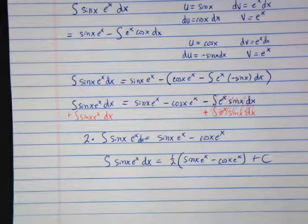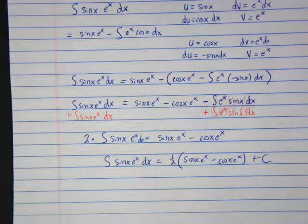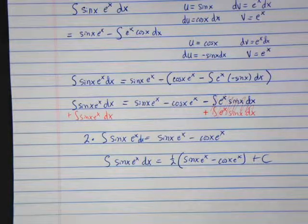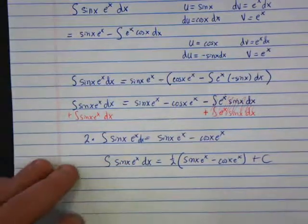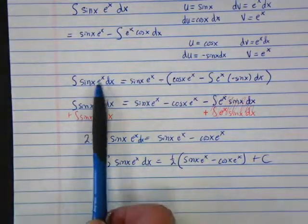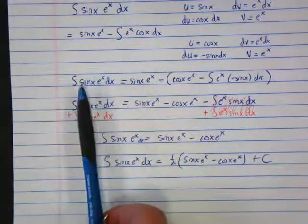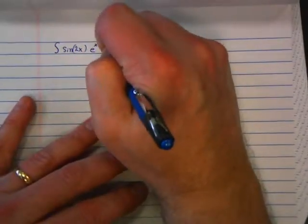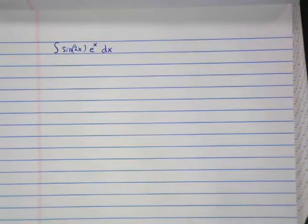A student asks: could you get a problem that doesn't cycle back if you used sine 2x instead, since you'd bring out a factor of 2 each time? Excellent question — let's try it. We'll use the integral of sine 2x times e to the x dx, keeping e to the x simple.